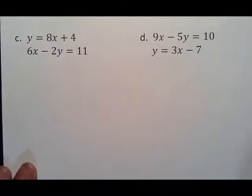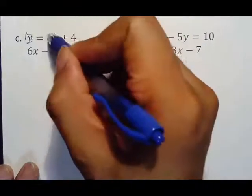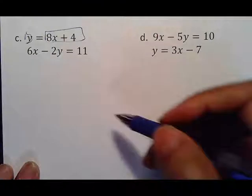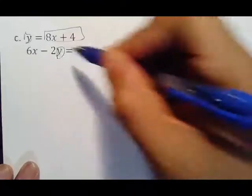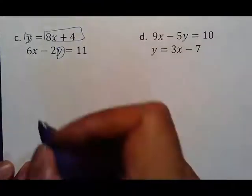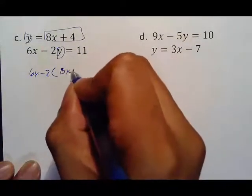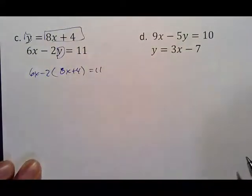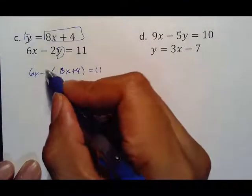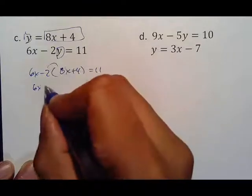For problem c, again y is alone, so we are going to take this and put it in for y. Remember it only goes in for y, so you end up with 6x minus 2 parentheses 8x plus 4 equals 11.